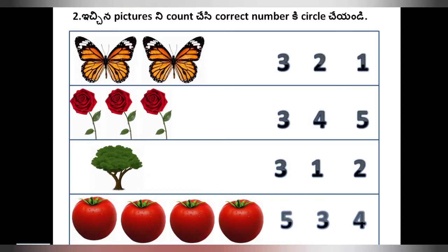So next, see room number 2. When we see here, there are pictures and there are numbers. We have to choose the correct number of the given pictures. Here we have to see — butterflies are there. There are 2 butterflies: 1 and 2. We have to count it: 1, 2. Then where is 2 here? Here is 3, here is 2, here is 1. So we have to circle this one.